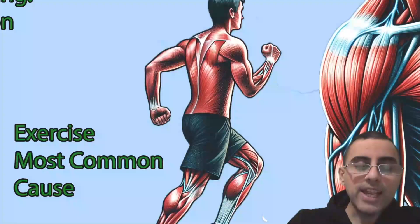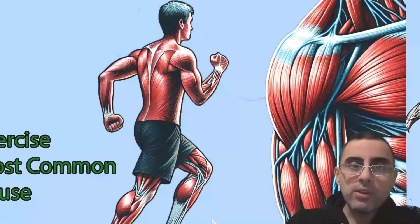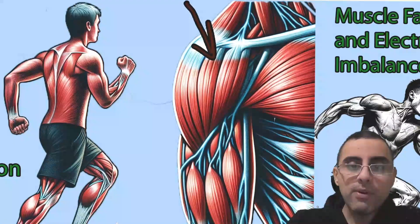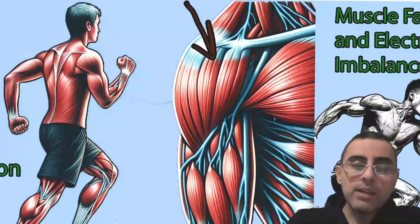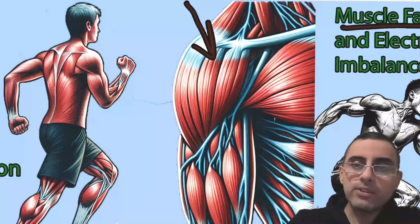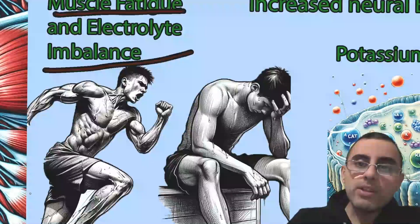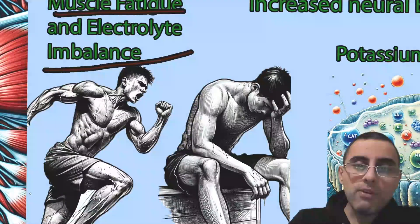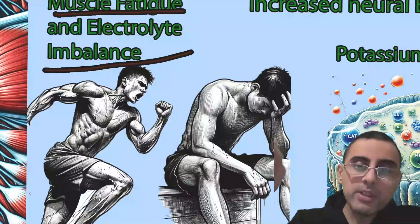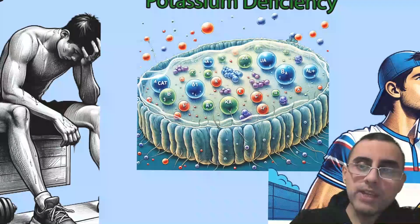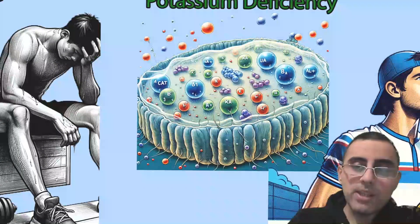The most common cause of fasciculation is exercise and fatigue. When a muscle is fatigued, electrolyte imbalance occurs. Electrolytes are very important for motor neuronal excitability and muscle contraction. Electrolytes such as potassium, sodium, and magnesium are crucial for muscle contraction and for signal transmission from the motor neuron to the muscle. That's why electrolyte imbalance is very important.